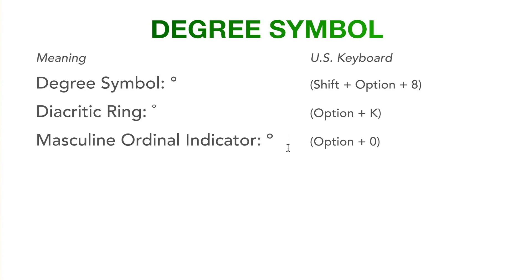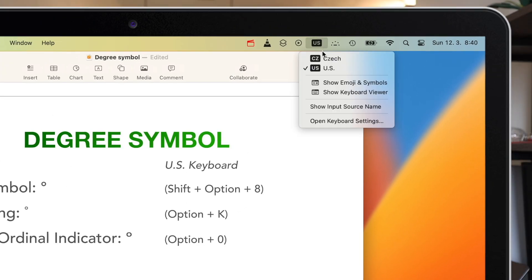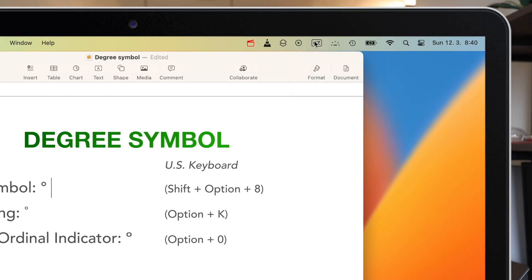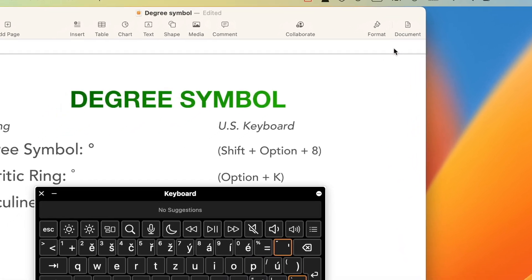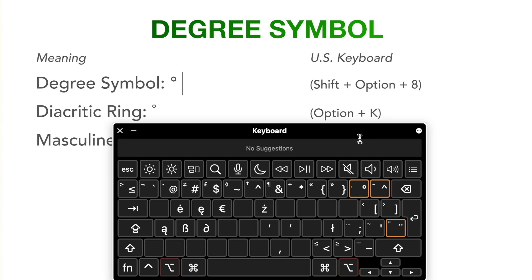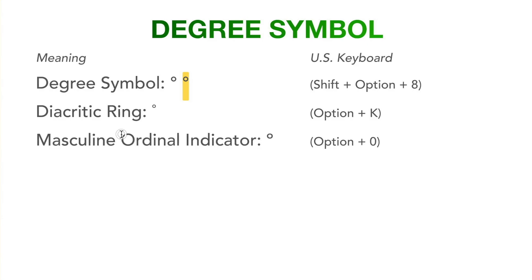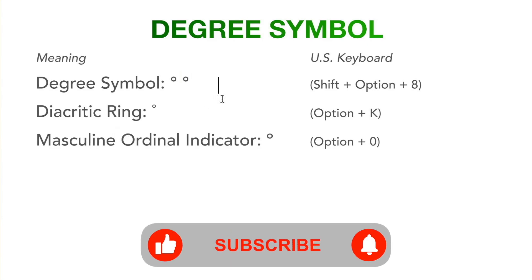So remember: Shift+Option+8 on the American keyboard. But you can also use the keyboard viewer I showed you and try to find out where the degree symbol is hidden for your language. On the Czech keyboard I am using, it's under Option plus the equal sign. What about your language? How do you type this symbol? You can share that with me in the comments below.